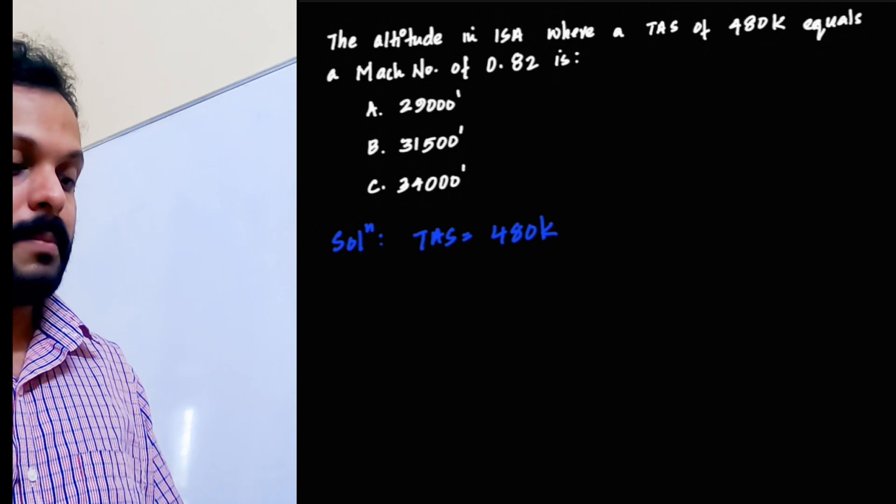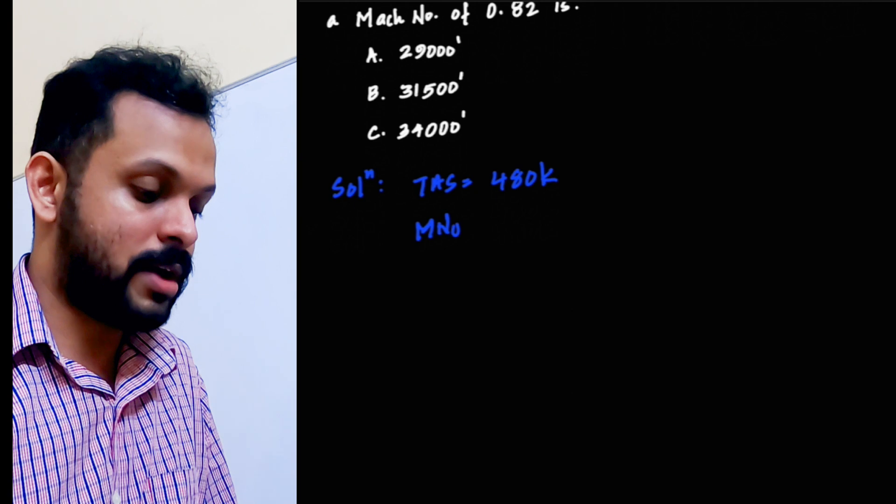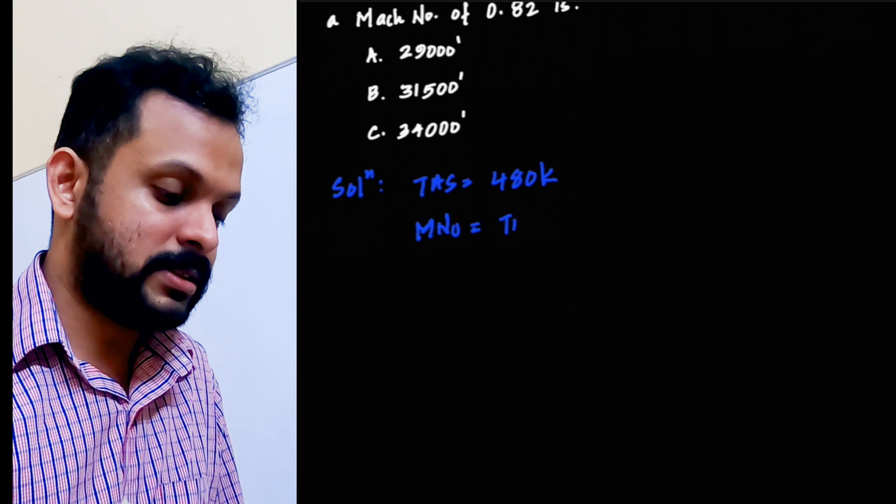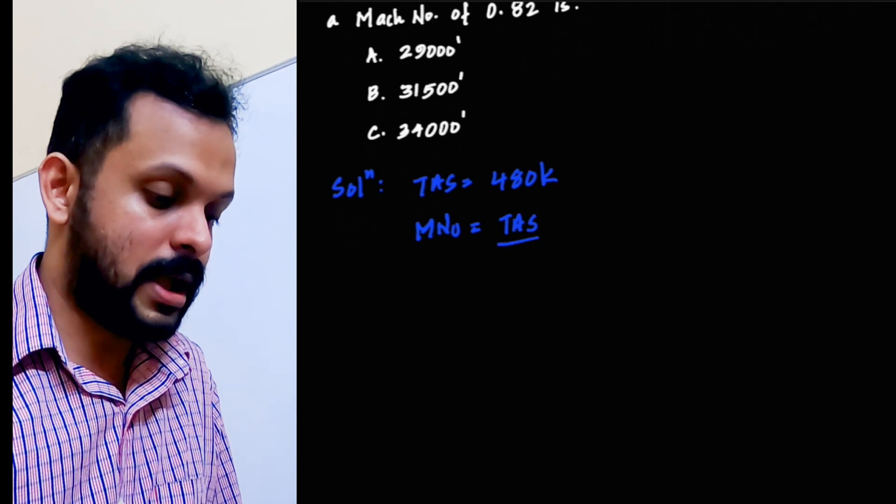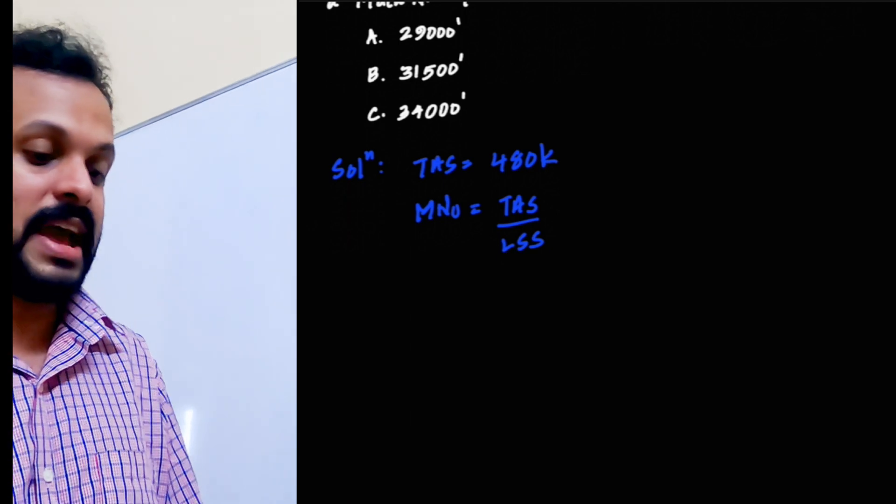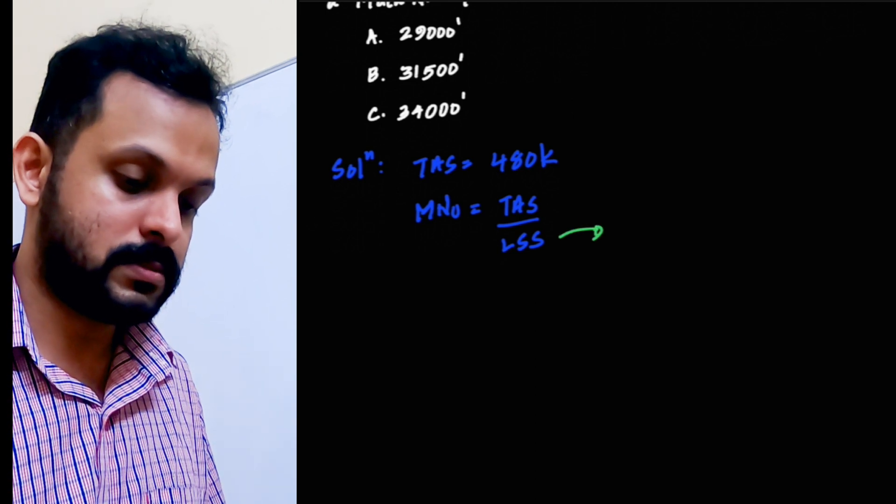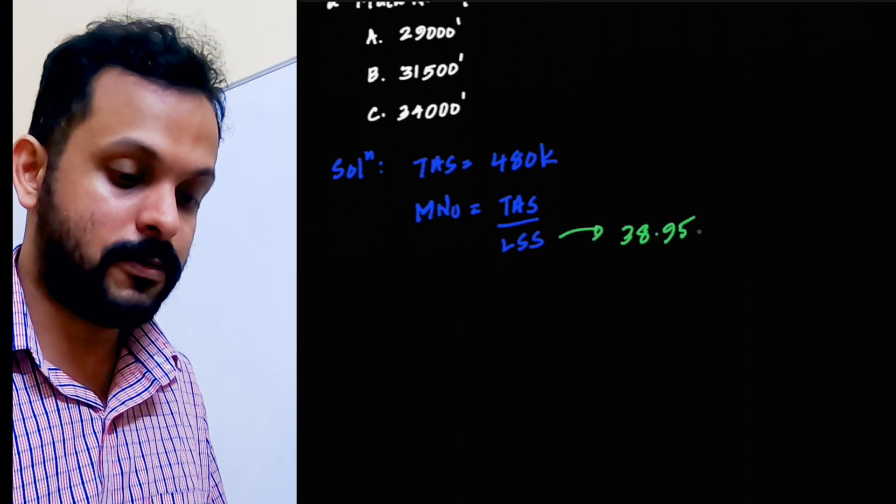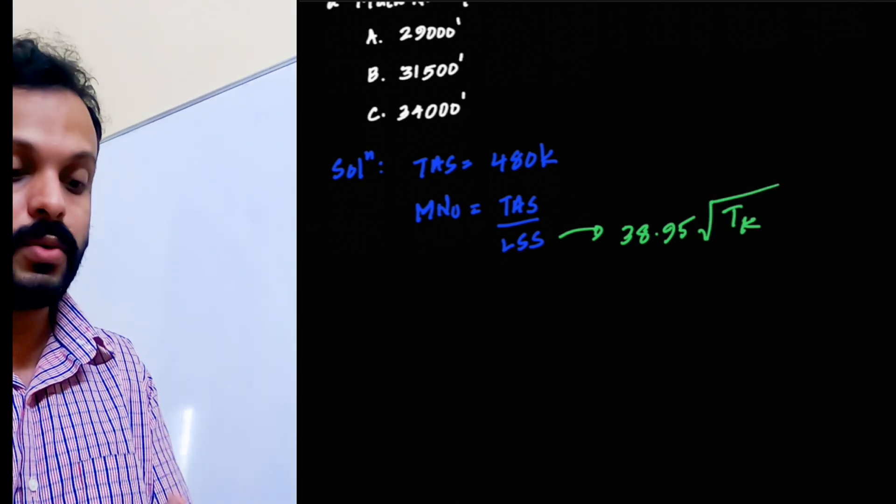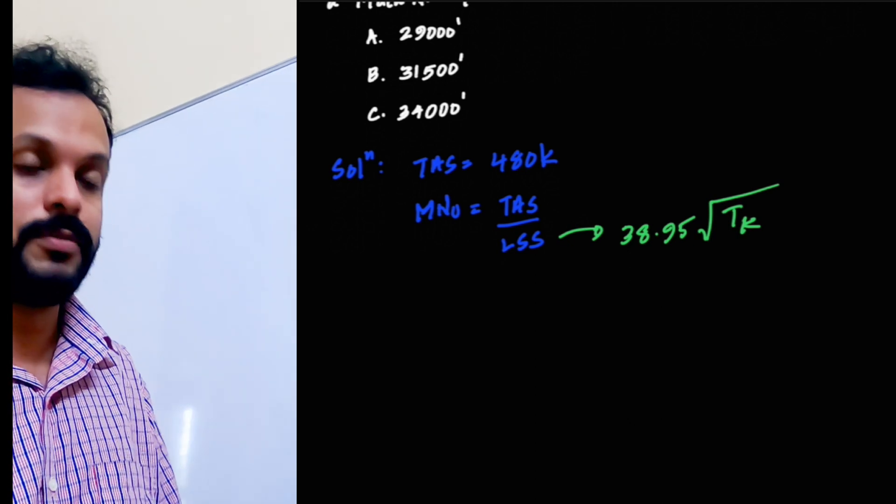And that equals Mach number at a particular altitude. Now if you look at the equation of Mach number, which we have very well explained under Mach meter, Mach number is the ratio between true air speed and the local speed of sound. It is basically the ratio between TAS and LSS. And LSS is 38.95 times the square root of temperature in Kelvin. This means that local speed of sound depends upon the temperature in Kelvin, absolute temperature.